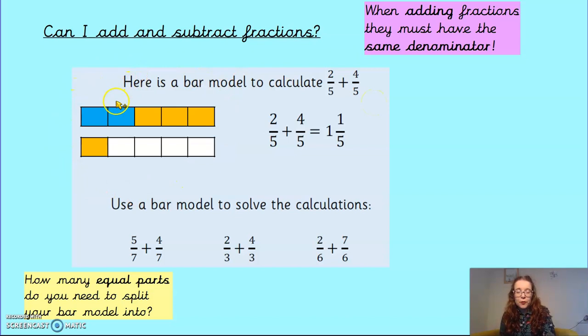OK, and I've got my bar models. Now, it's been split into five parts. Each bar model is split into five parts because my denominator is five, which means my whole has got five parts in it.